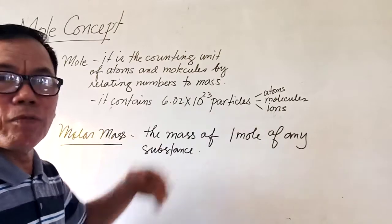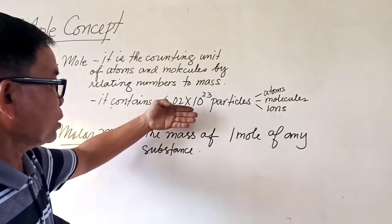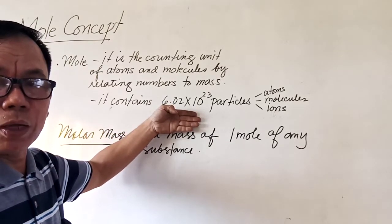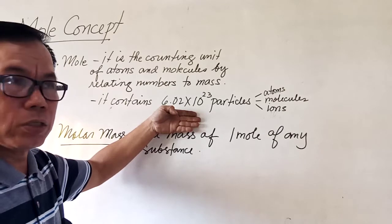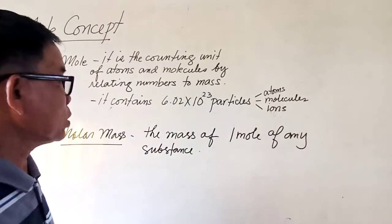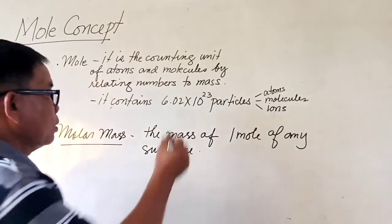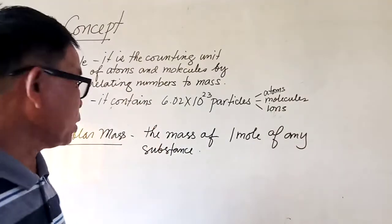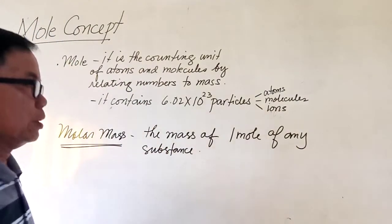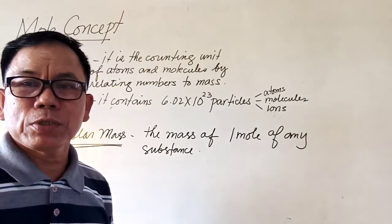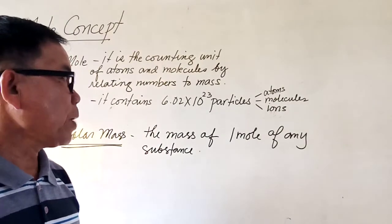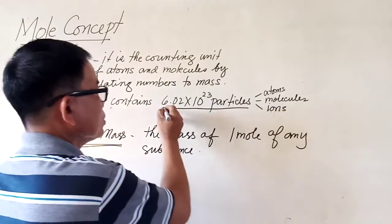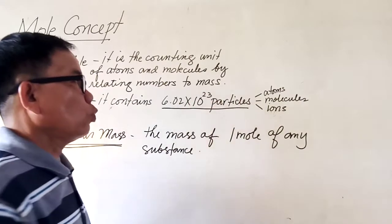This is named in behalf of Amedeo Avogadro, although he was not the one who discovered this figure. The mass of one mole of any substance is known as the molar mass. Whatever kind of substance, as long as it is one mole, the number of particles is the same — 6.02 times 10 to the 23rd.